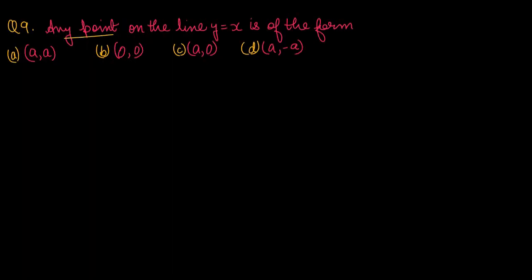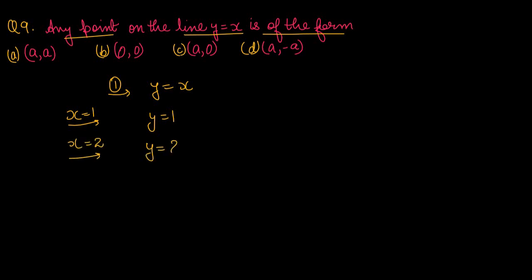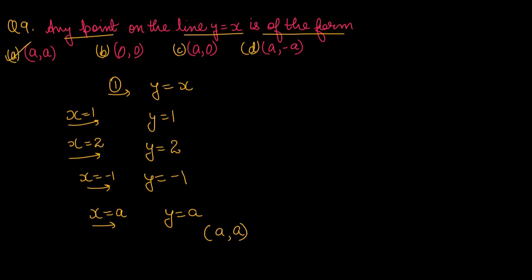Question number 9: any point on the line y equals to x is of the form? जब हम x को 1 fit करेंगे तो y भी 1 बन जाएगा, x को 2 fit करेंगे तो y भी 2, x को minus 1 fit करेंगे तो y भी minus 1। Let us suppose हमने x को a fit करा, तो y भी a बन जाएगा। तो point (a, a) की form का होएगा। Option number A is the right one.